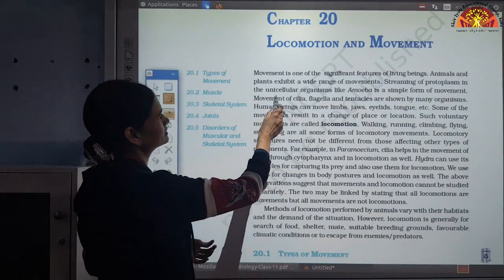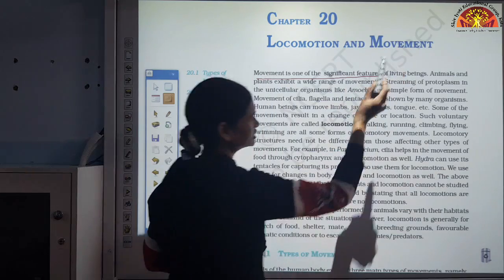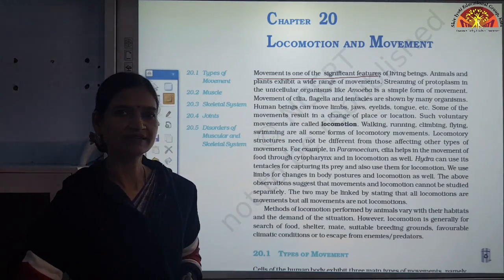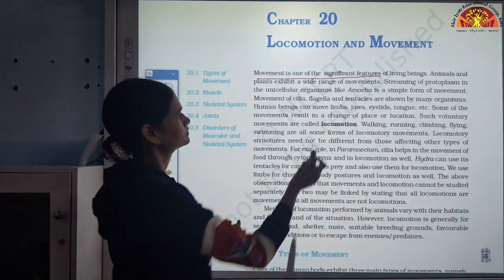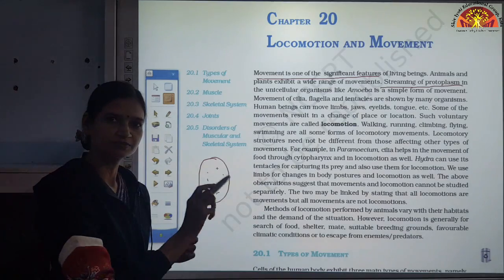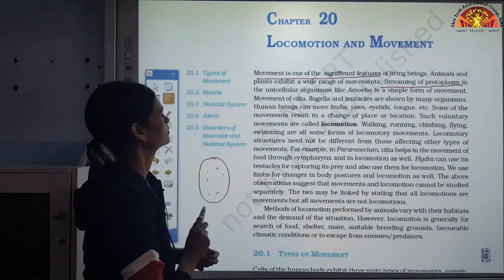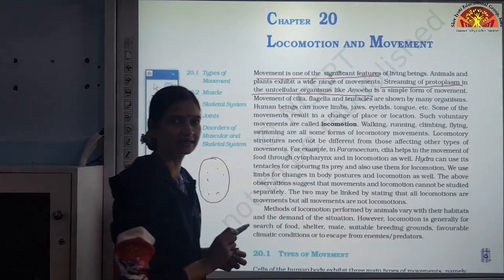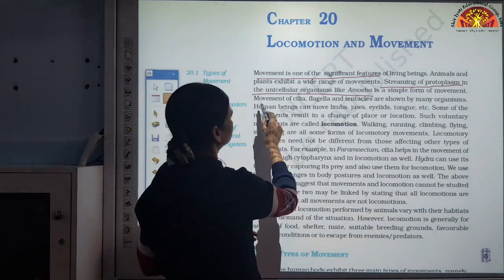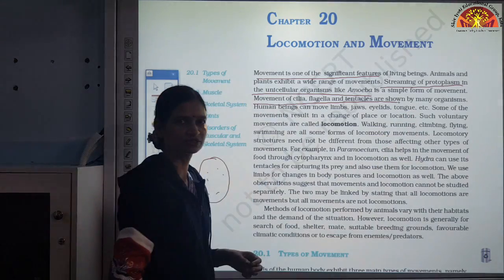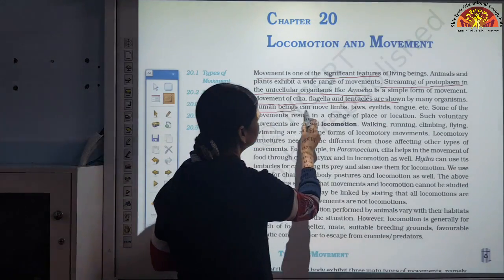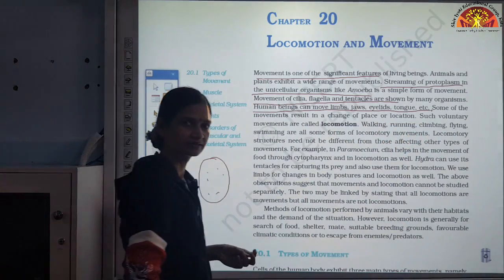We can underline that movement is one of the significant features of all living beings — living beings show movement. Animals and plants exhibit a wide range of movements. For example, streaming of protoplasm: in a cell, the cytoplasm has movement — that is streaming of protoplasm in unicellular organisms like Amoeba. Then movement of cilia, flagella, and tentacles shown by some higher organisms. Human beings can move limbs, jaws, eyelids, trunks, etc. This is movement.